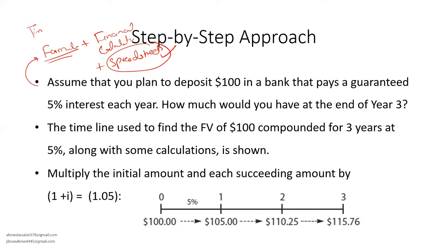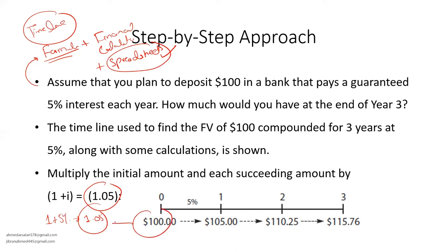The timeline used to find the future value of $100 compounded for three years at 5%, along with the calculation, is shown. You multiply the initial amount and each succeeding amount by 1.05 — that is 1 + 5% = 1.05. So multiply by 1.05 to get the first value, then multiply again by 1.05 to get the second, and again by 1.05 to get the third.